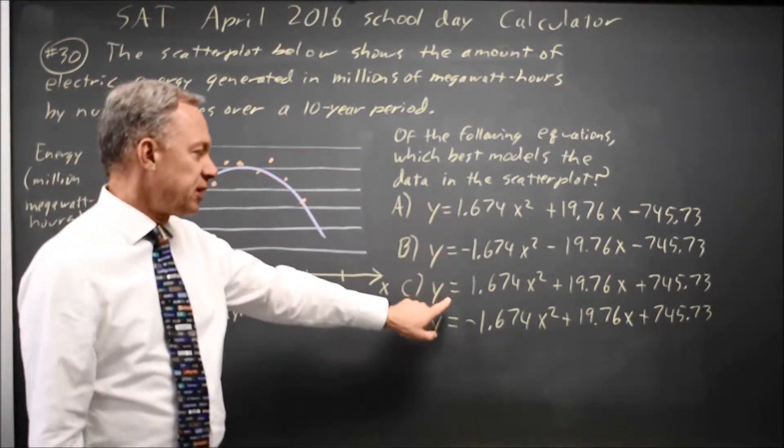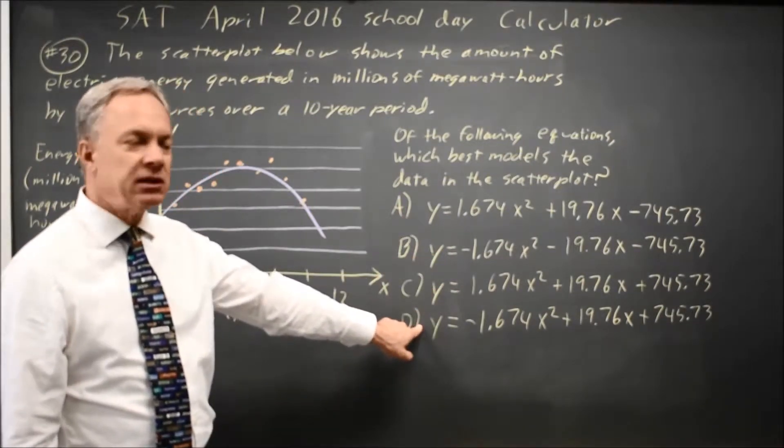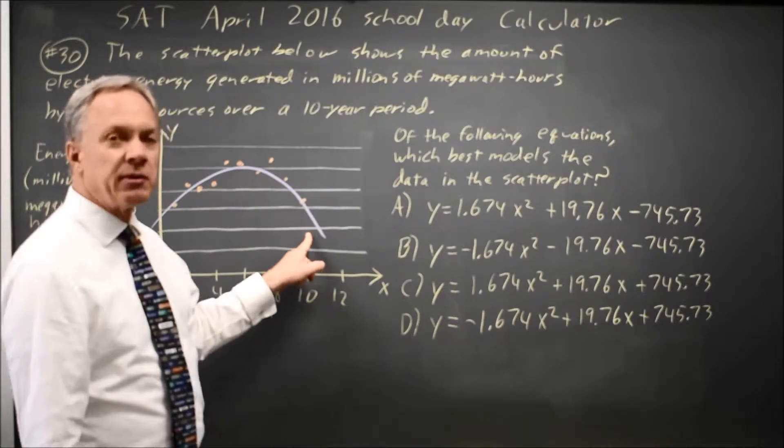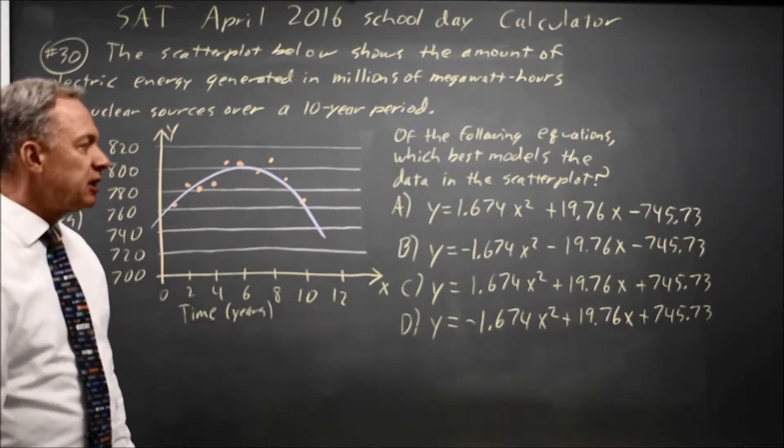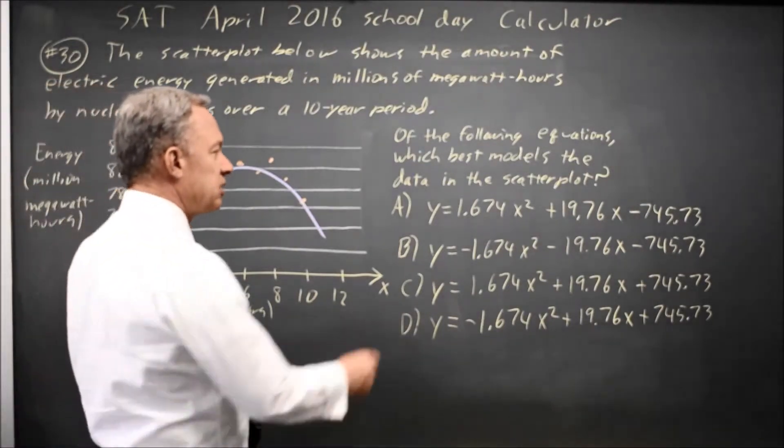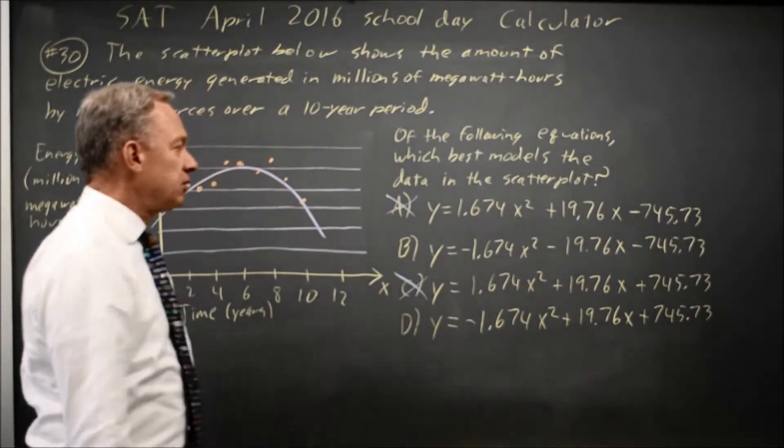We have two parabolas that open up, choices A and C, and two that open down, choices B and D. I just said the parabola opens down, and I think it's clear from the scatter plot that that would be the correct model. So A and C, which open up, are incorrect.